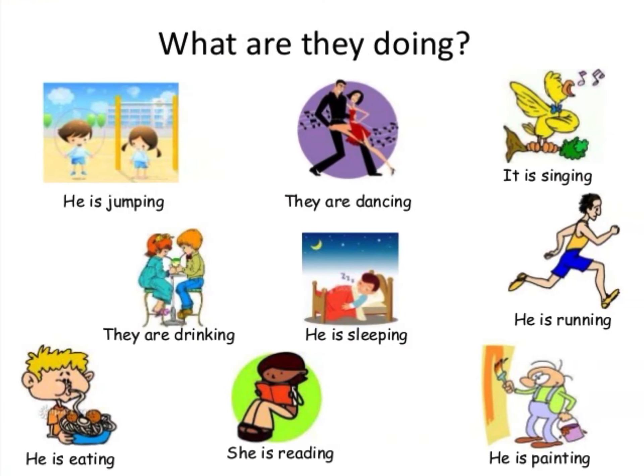Here you can see other examples. What are they doing? As you can see in the picture, every one of these characters is doing something different. He is jumping. Él está saltando. They are dancing. It is singing. They are drinking. He is sleeping. He is running. He is eating. She is reading. He is painting.